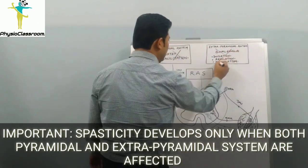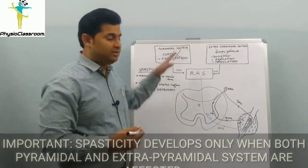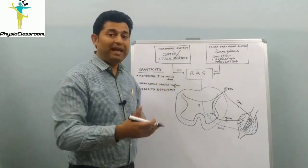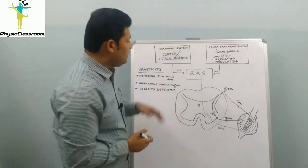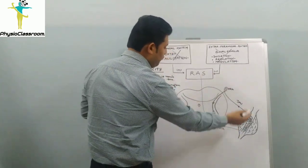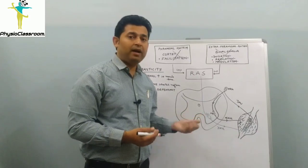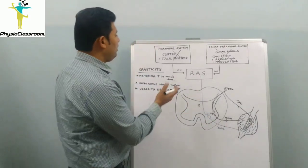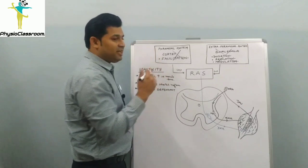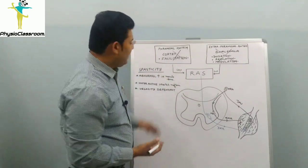From our previous videos we already have a good understanding of the muscle stretch reflex and the neurophysiological mechanism behind the maintenance of normal tone. Spasticity will occur only when both the pyramidal and the extrapyramidal systems are not going to function properly, as these are the structures and pathways where the lesion will be.